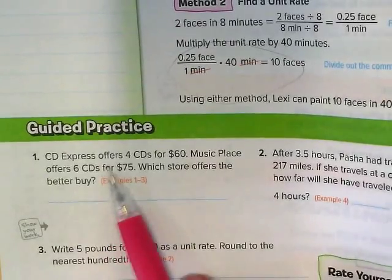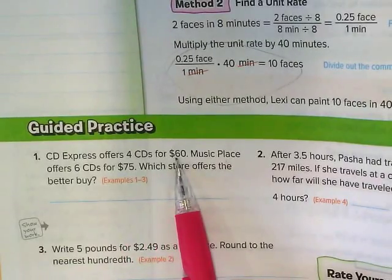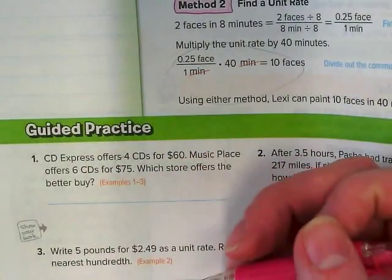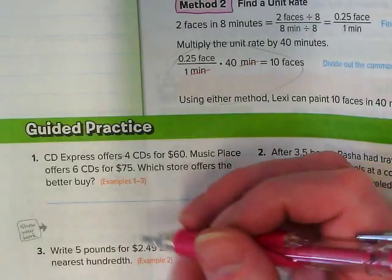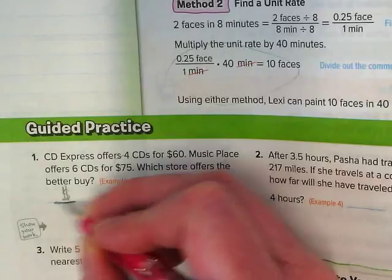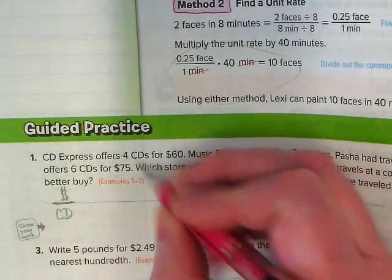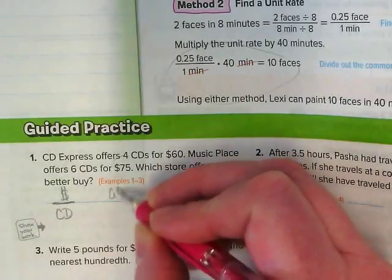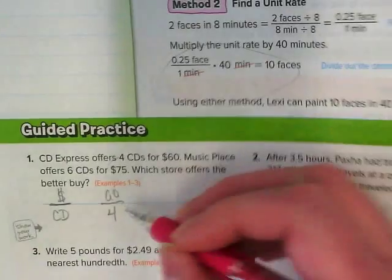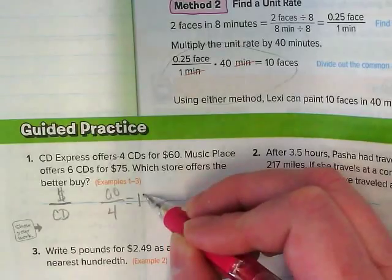But if we had a store that was selling four CDs for $60, do you remember in my opening video I said whenever you have money, where does it go in the ratio? It always goes on the top. So we're going to set this up as money on top and the CD number on the bottom. The first store is $60 for four CDs. 60 divided by four is 15.